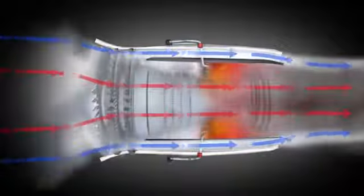The bypass airflow goes past the core engine and is not used for the combustion of the fuel. The rotating fan accelerates the bypass airflow, which creates a strong thrust at the exit of the engine.